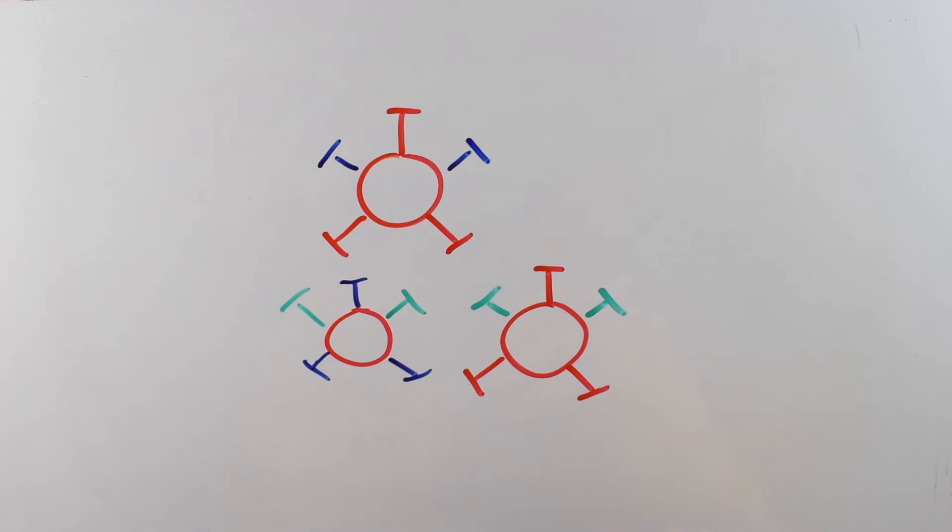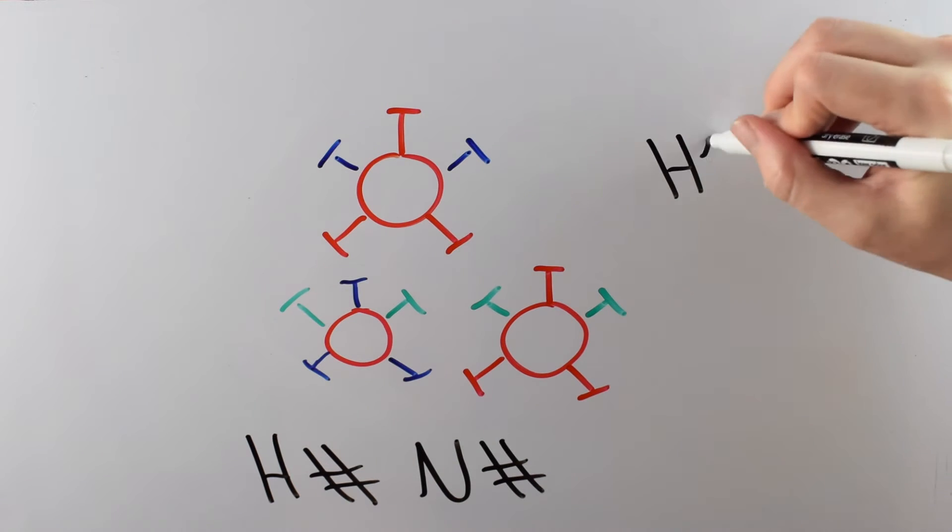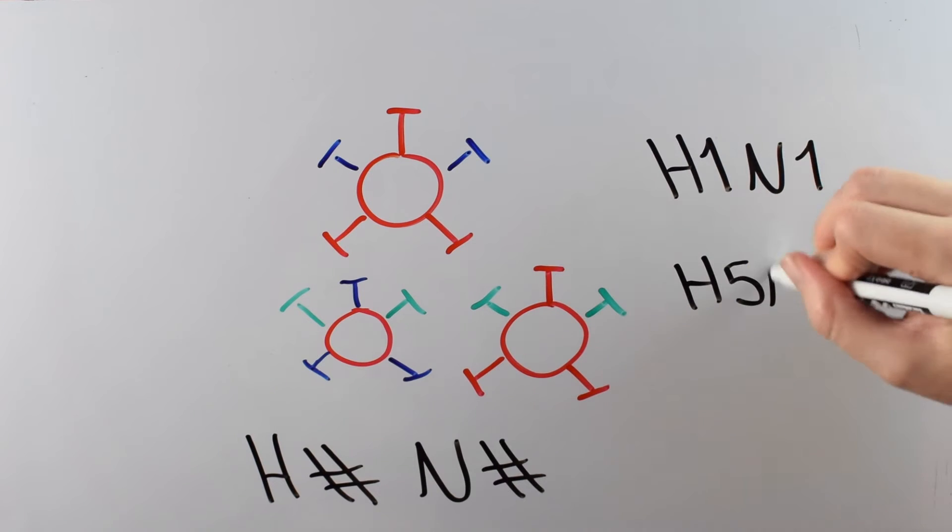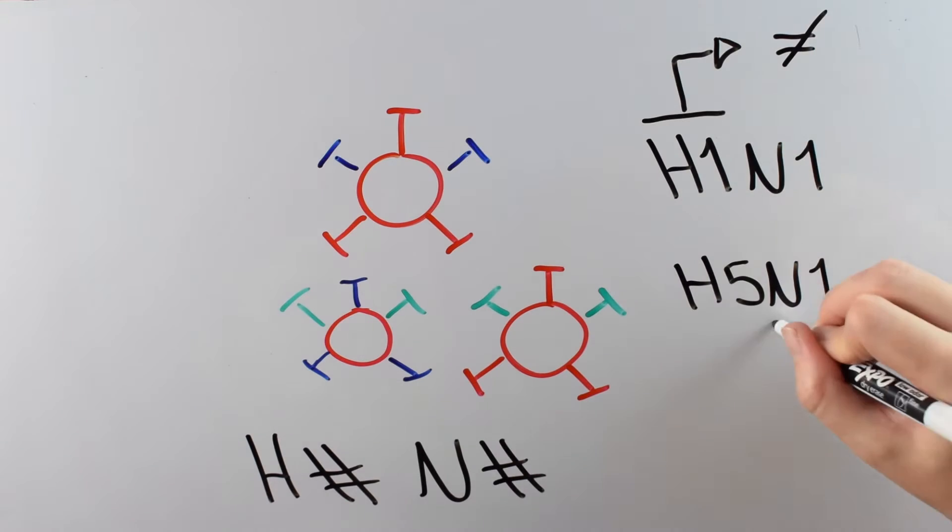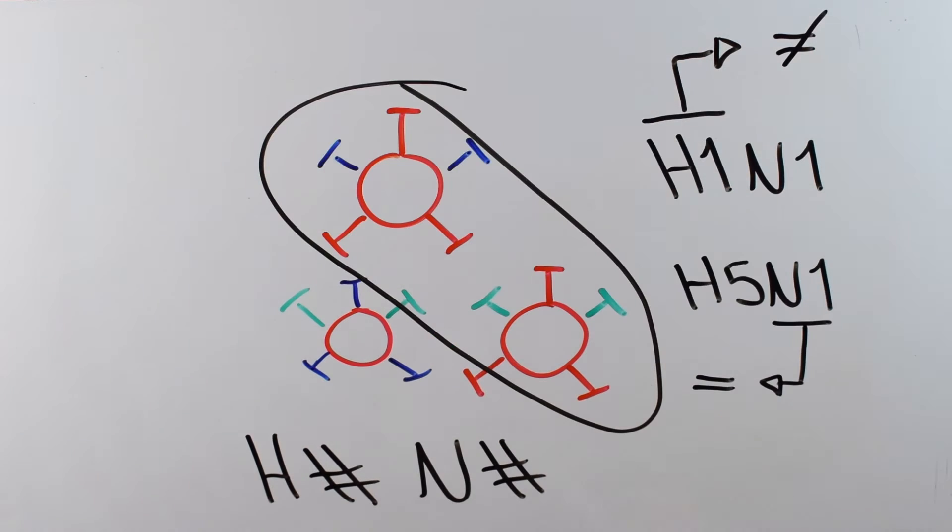The types of flu are labeled by H number, N number. The H and the N refer to proteins on the surface of the virus. So when you hear H1N1 or H5N1, that means that those are two different types of the flu virus that have the same N protein but different H proteins, like the two that you see here.